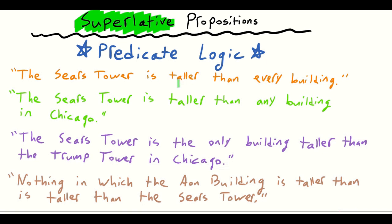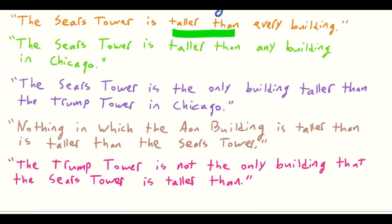The Sears Tower is taller than every building, for instance — that's a false proposition, but we can still translate it into predicate logic. Then we have the Sears Tower is taller than any building in Chicago, which is a true statement. Next, the Sears Tower is the only building taller than the Trump Tower in Chicago. Then we have nothing that the AN building is taller than is taller than the Sears Tower. And finally, the Trump Tower is not the only building that the Sears Tower is taller than.